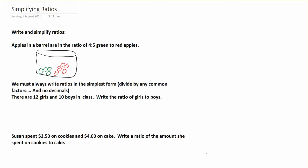But I could also have eight green apples and ten red apples. They're still in a ratio that's the same as 4:5. So 8:10 is the same as 4:5.